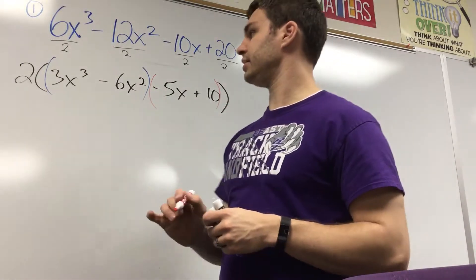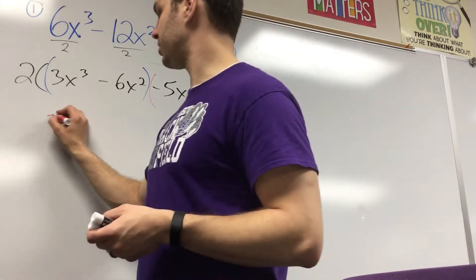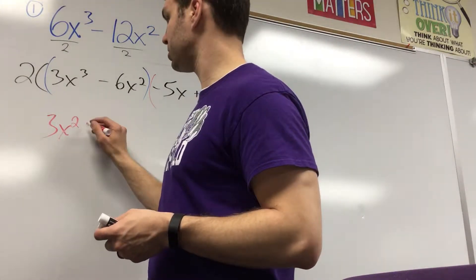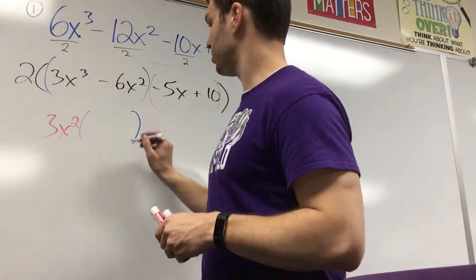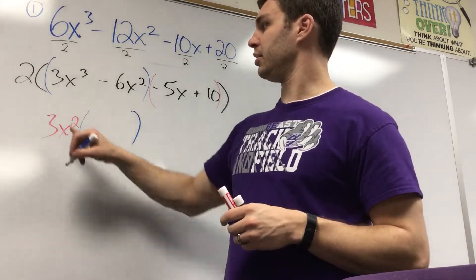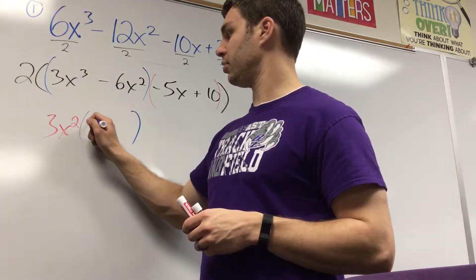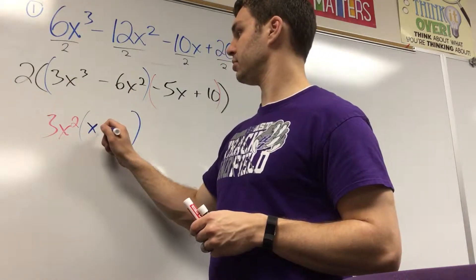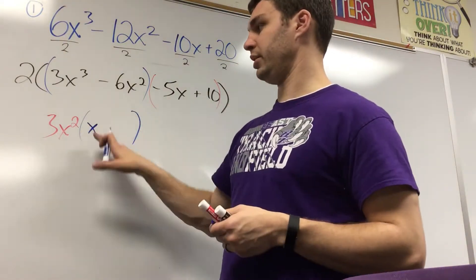Looking at those first two, I see that they both have a 3 in common as well as an x squared. So I'm going to take a 3x squared out. Keep my blue parentheses there. And then 3x to the third divided by 3x squared is going to be 1x, just 1x. So you can put the 1 there, you don't have to, you just leave it as x.